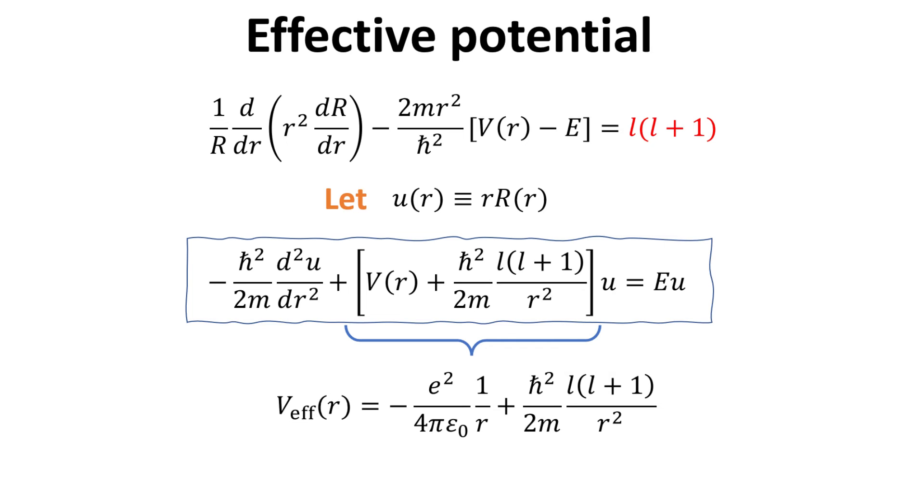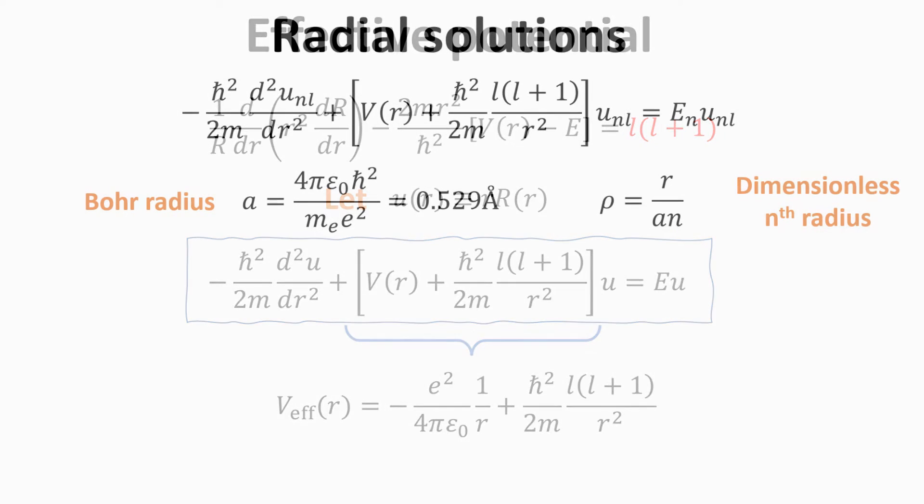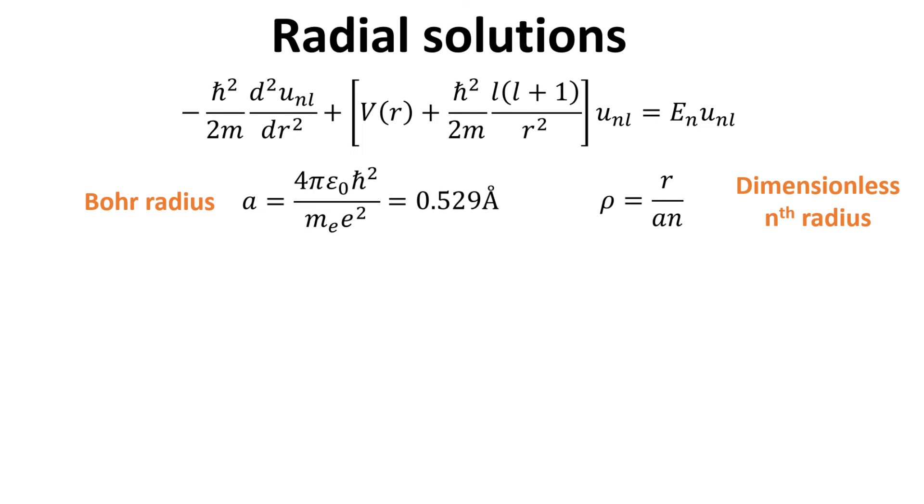Thus, this amounts to solving a one-dimensional Schrödinger equation. Of course, this can be solved very easily numerically. Luckily, it is also possible to solve this radial equation analytically.